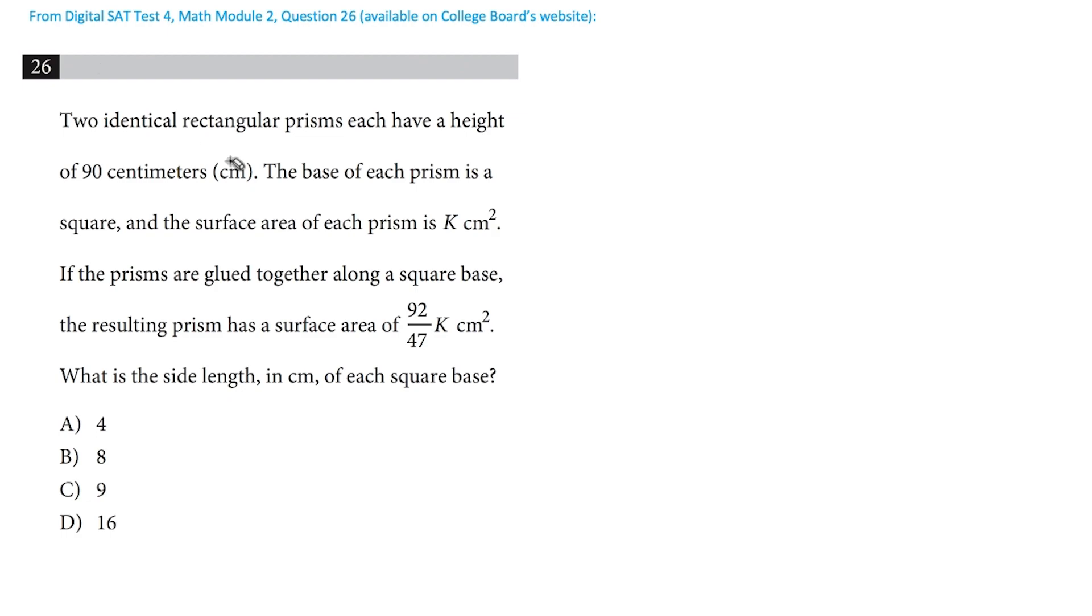We've got these two identical rectangular prisms, each have a height of 90. So let's go ahead and bring a little picture of that in. So here's one rectangular prism, and here's another rectangular prism, and they each have a height of 90. And they also each have a square base.